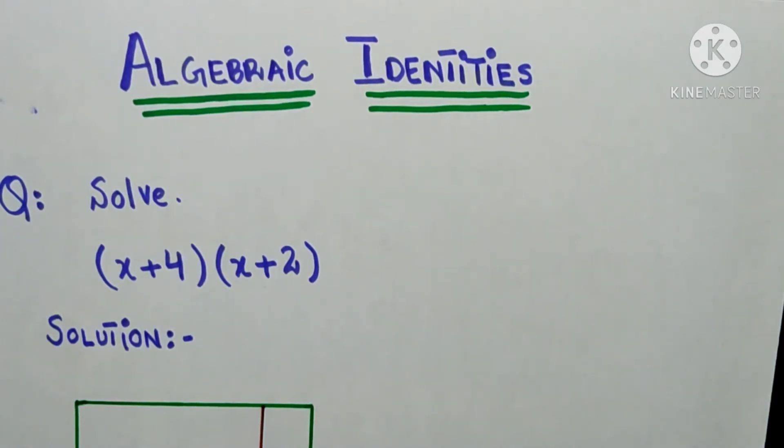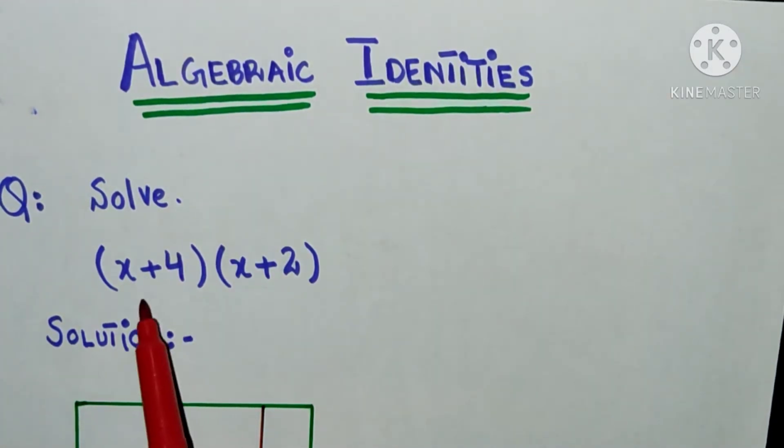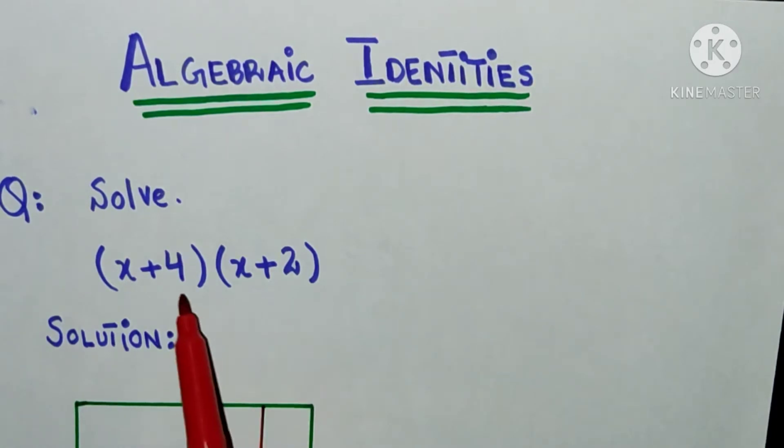Today I am here with a new method that will create an interest to solve these types of questions. What is that new method? I have a question: (x+4) multiply (x+2). How will I solve it?